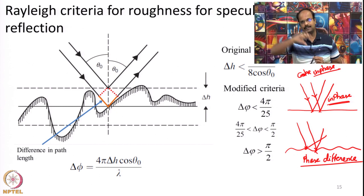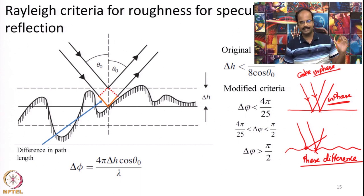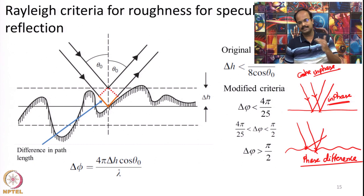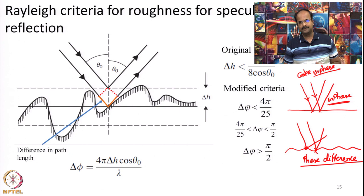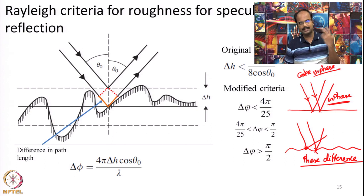Even though they came in phase, after reflection there will be a small phase difference between them. The Rayleigh criteria was based on this particular phase difference. What Rayleigh said is: if the phase difference between different waves reflecting at different points on the terrain feature is less than pi by 2, then that surface can be classified as smooth. On the other hand, if the phase difference between the two waves is more than pi by 2, he classified the surface as rough. The threshold of pi by 2 is actually a thumb rule.